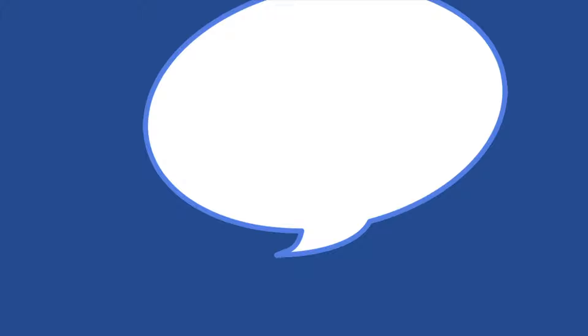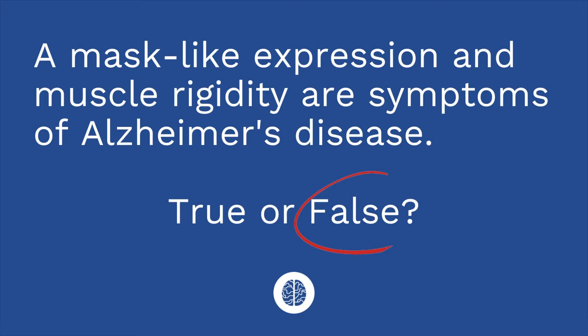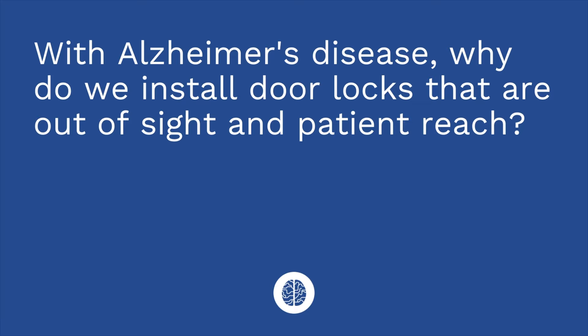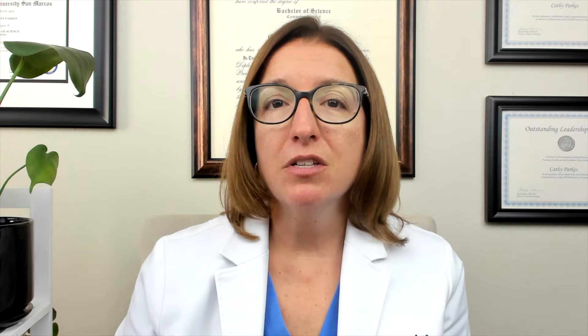Ready for your quiz? Question one: levodopa carbidopa is used to treat what disorder? The answer is Parkinson's disease. Question two, true or false: a mask-like expression and muscle rigidity are symptoms of Alzheimer's disease. The answer is false — these are symptoms of Parkinson's disease. Question three: with Alzheimer's disease, why do we install door locks that are out of sight and patient reach? We do this because of the risk of wandering, to prevent the patient from walking out of the house and wandering down the street.